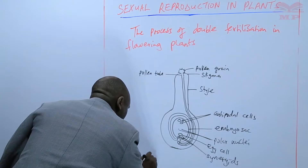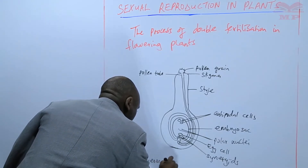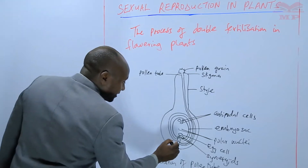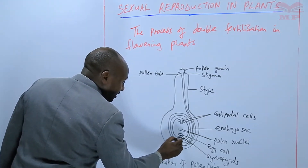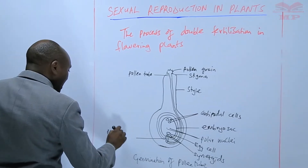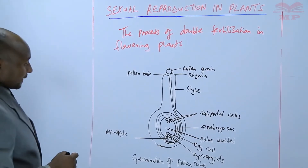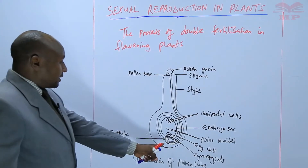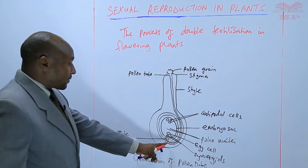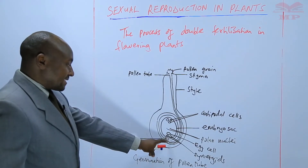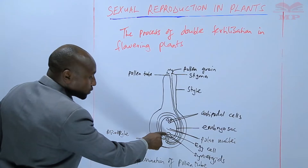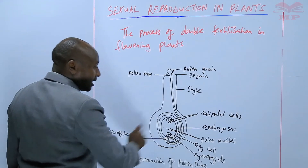So this is the germination of the pollen tube. This is the tube nucleus, and the pollen tube enters into the embryo sac through the micropyle — we saw these parts earlier. When the pollen tube enters the embryo sac through the micropyle, the tube nucleus disintegrates, to allow the two male nuclei that are behind to fuse with the egg cell and also with the polar nuclei.